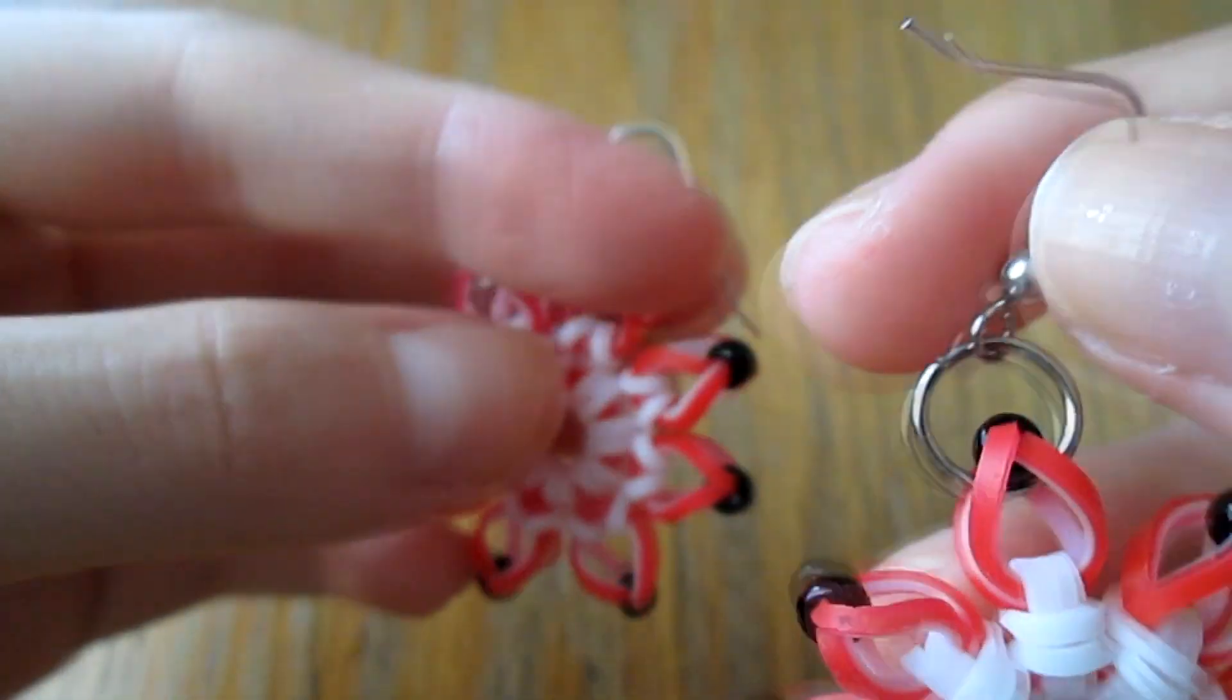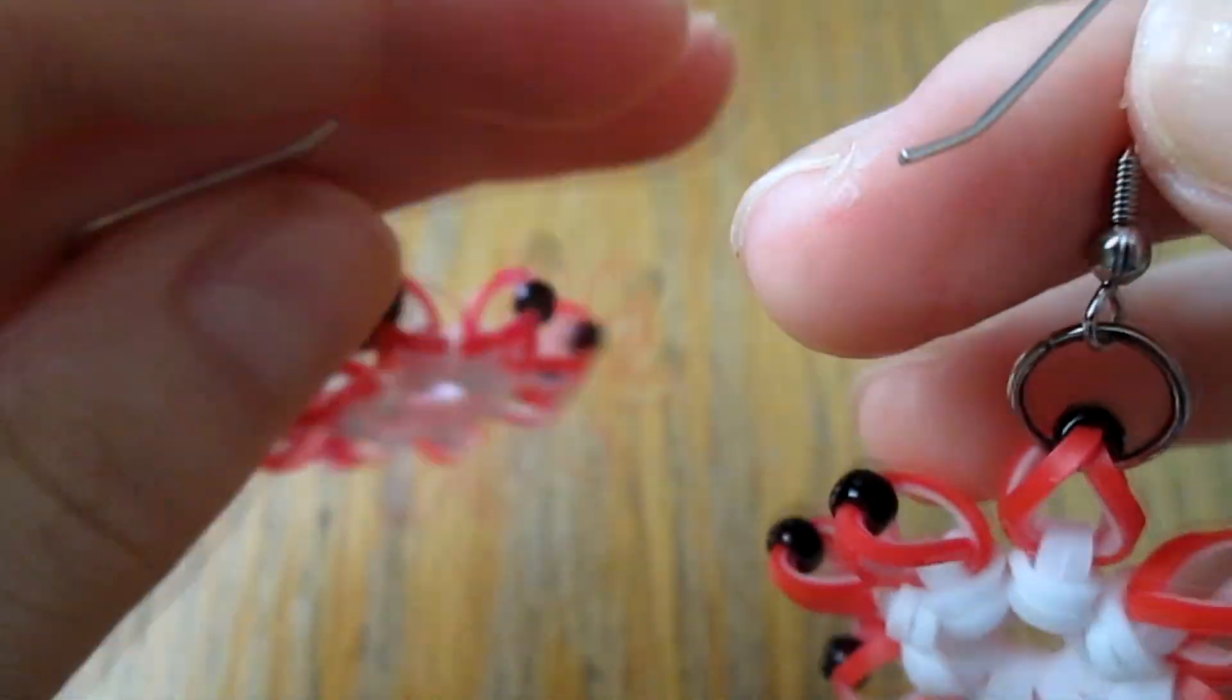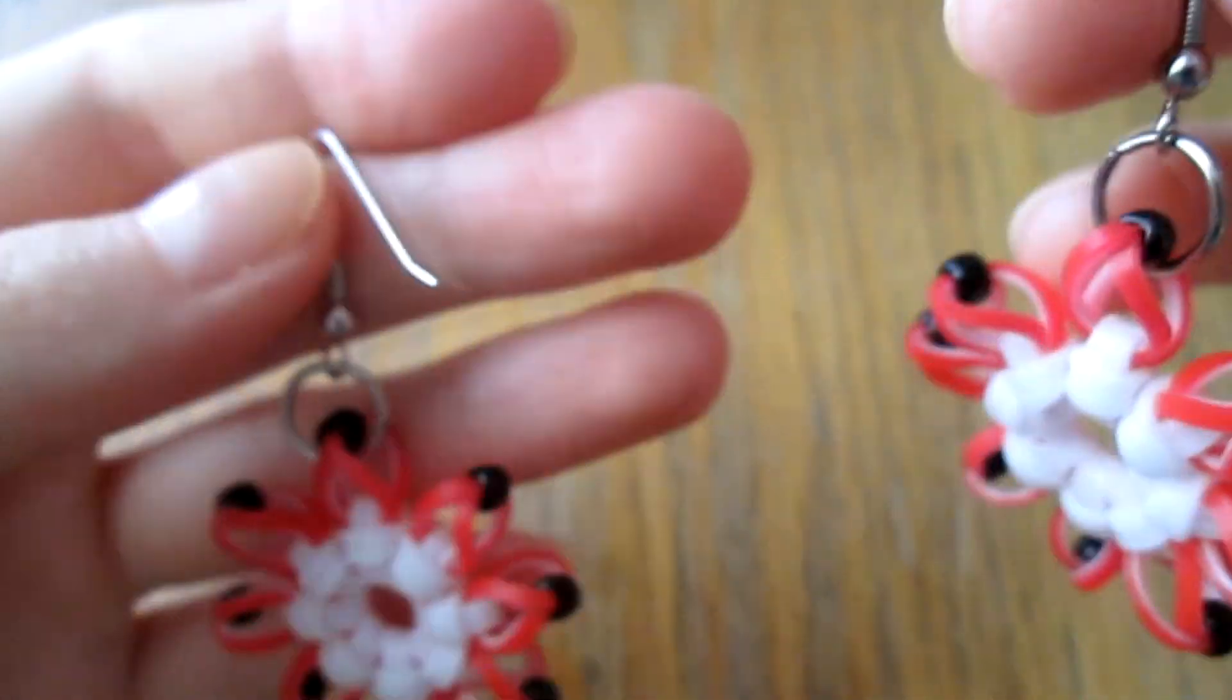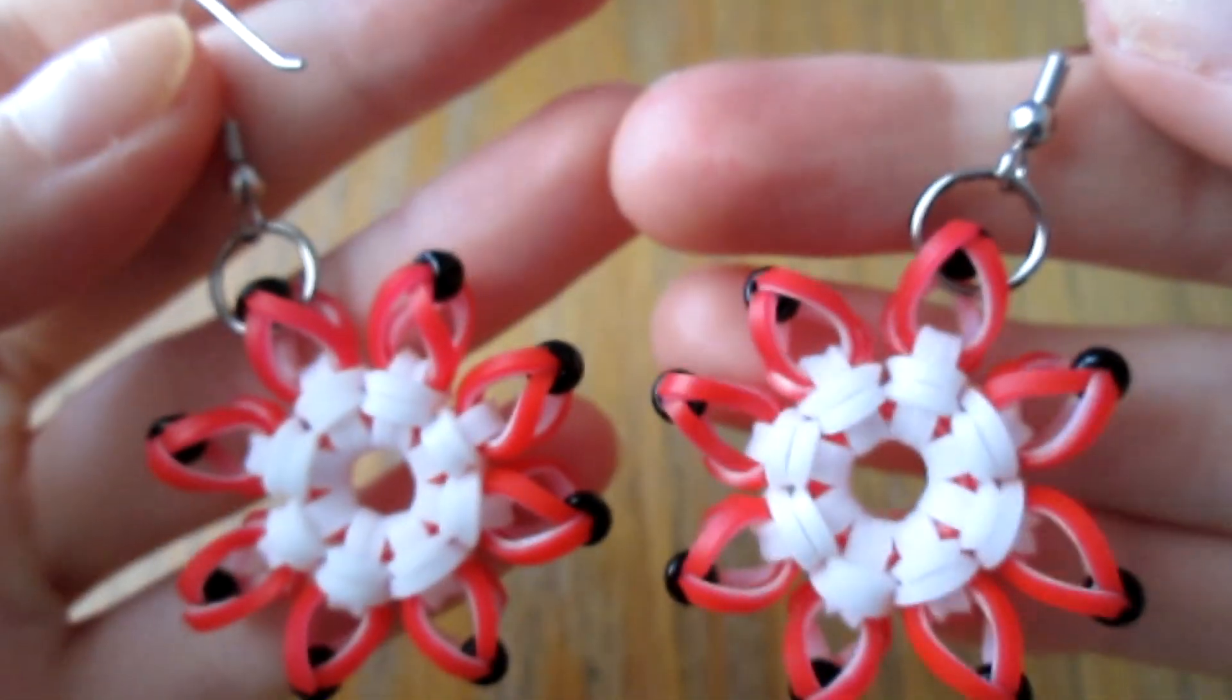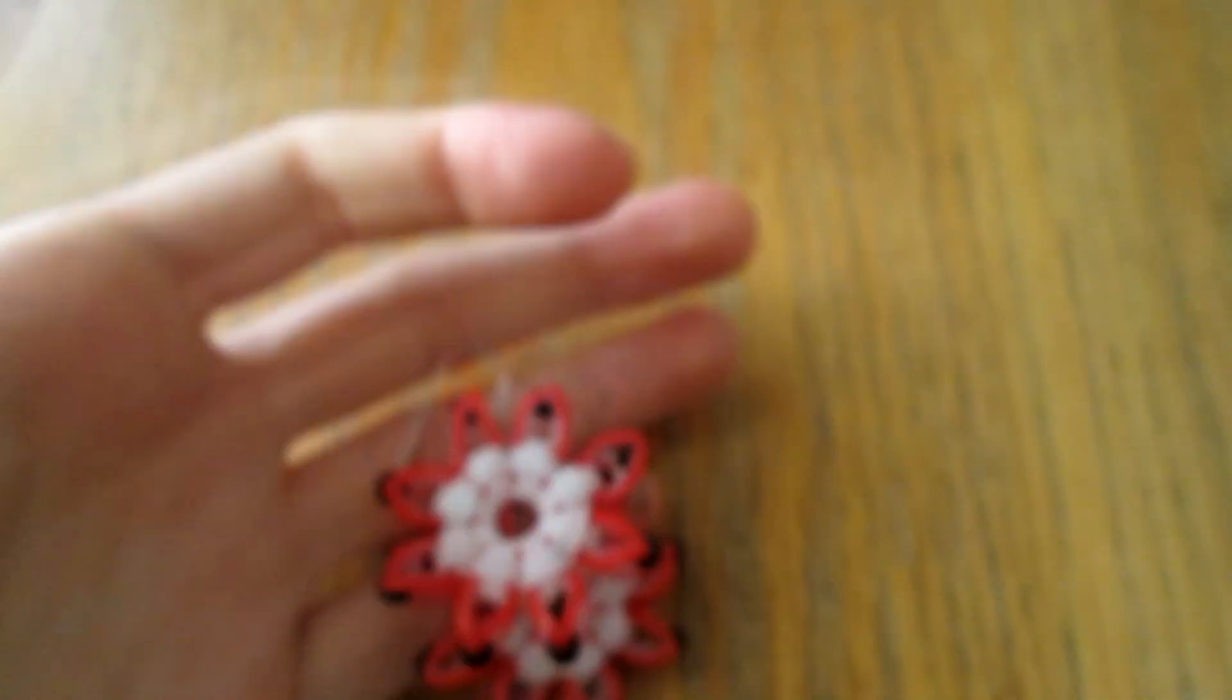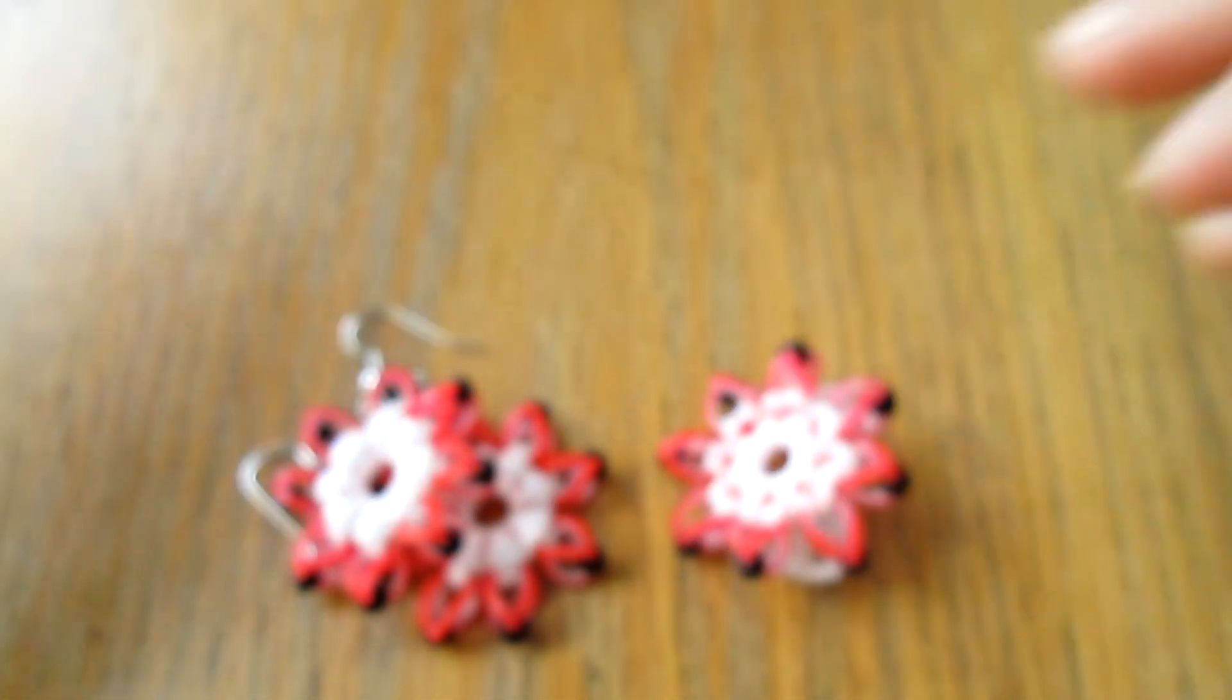But yeah, make sure you do the other earring in the same way. When you have it on your ear, you want the same sides to be facing outward. That way it looks the most nice, I guess. But yeah, those are the earrings. I hope you enjoyed this simple little tutorial, and bye!